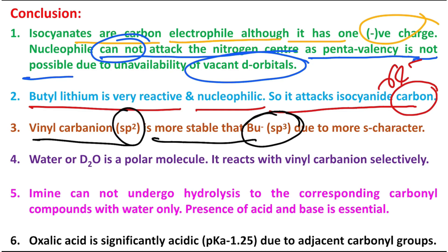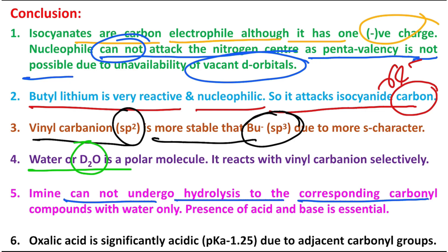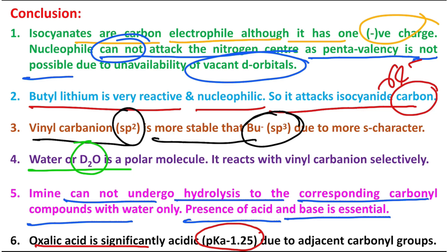The vinyl carbanion formed is more stable than a butyl carbanion because it is sp2 hybridized, while a butyl carbanion is sp3 hybridized — the greater s-character makes it more reactive. D₂O, being a polar molecule, selectively protonates (deuterates) this sp2 carbanion. Imine hydrolysis to the corresponding carbonyl compound requires an acid or base — water alone is insufficient. Oxalic acid has a pKa of 1.25, compared to acetic acid's 4.74, showing how much stronger oxalic acid is due to its adjacent electron-withdrawing carbonyl groups.